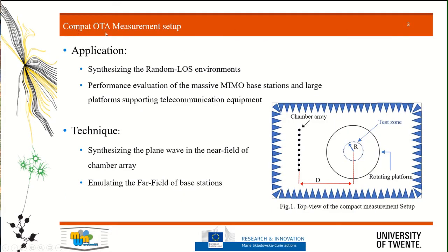My role was on the design of a compact OTA measurement setup. As shown in Figure 1, I provided a top view of the compact measurement setup. In a measurement setup for antenna systems we have an anechoic chamber which includes the chamber array or reference array, and on the other side we have a quiet zone where we can put the antenna system under test. It usually includes a rotating platform in order to rotate the antenna system to characterize it depending on different directions. We want to use this measurement setup to synthesize the random line-of-sight environment in order to evaluate the performance of massive MIMO base stations or large platforms that support telecommunication equipment.